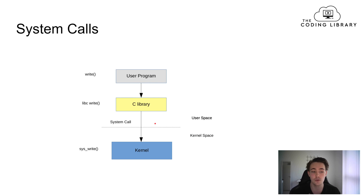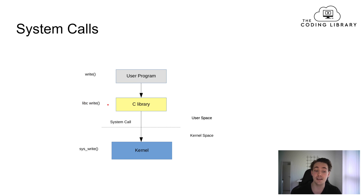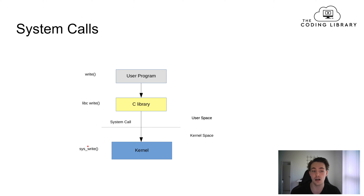Here is an example of a system call. We have a user program running in the Linux operating system, and we call the write command from that user program. This goes down to the C library — the glibc — which has the write command, and that becomes a system call to the Linux kernel, transitioning from user space to kernel space. There's a lookup table of system calls in the kernel, and in this case we want to write something, so we use the sys_write command, which is the system call executed in the kernel. That write command then actually does something with the hardware from the kernel.